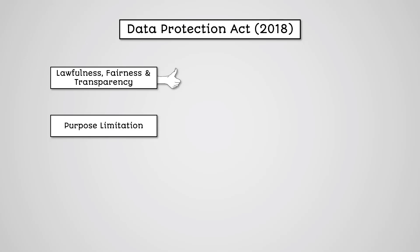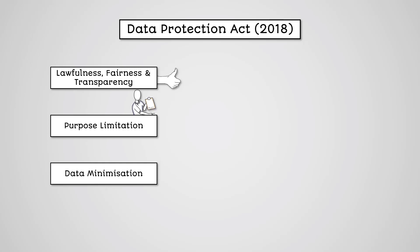The second principle is purpose limitation. You must be clear from the start as to why the data is being gathered, and if you wish to use data for another purpose, ensure it is fair. The third principle is data minimization. You must ensure the data is sufficient for the purpose you gathered it and no additional information is held that you don't need for that purpose.